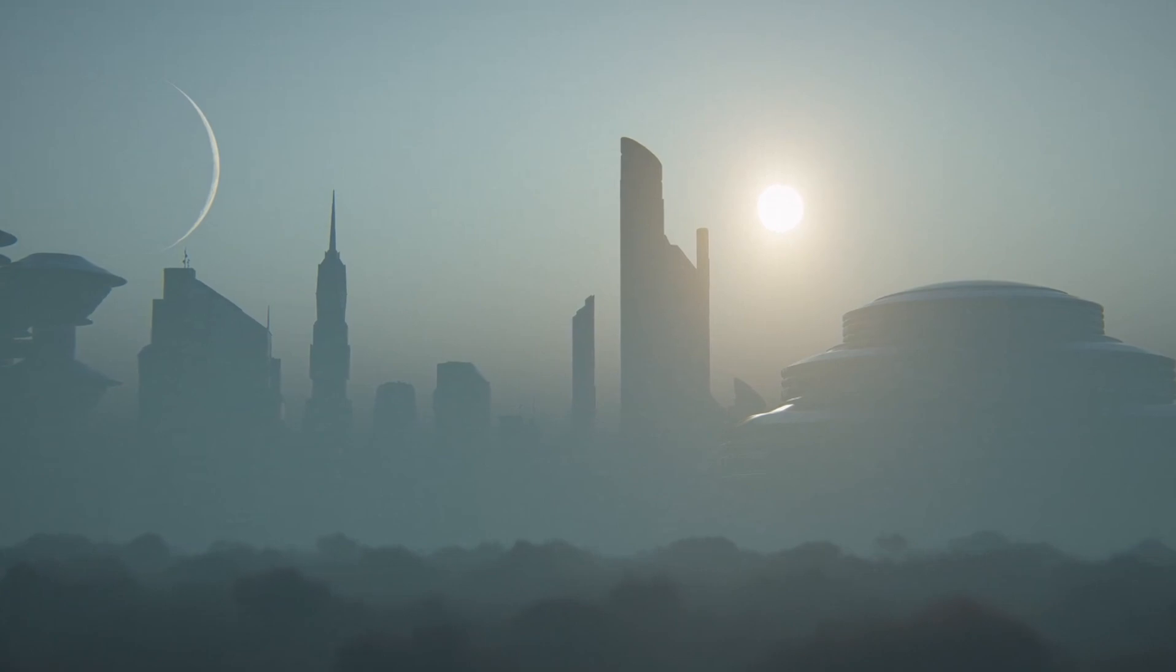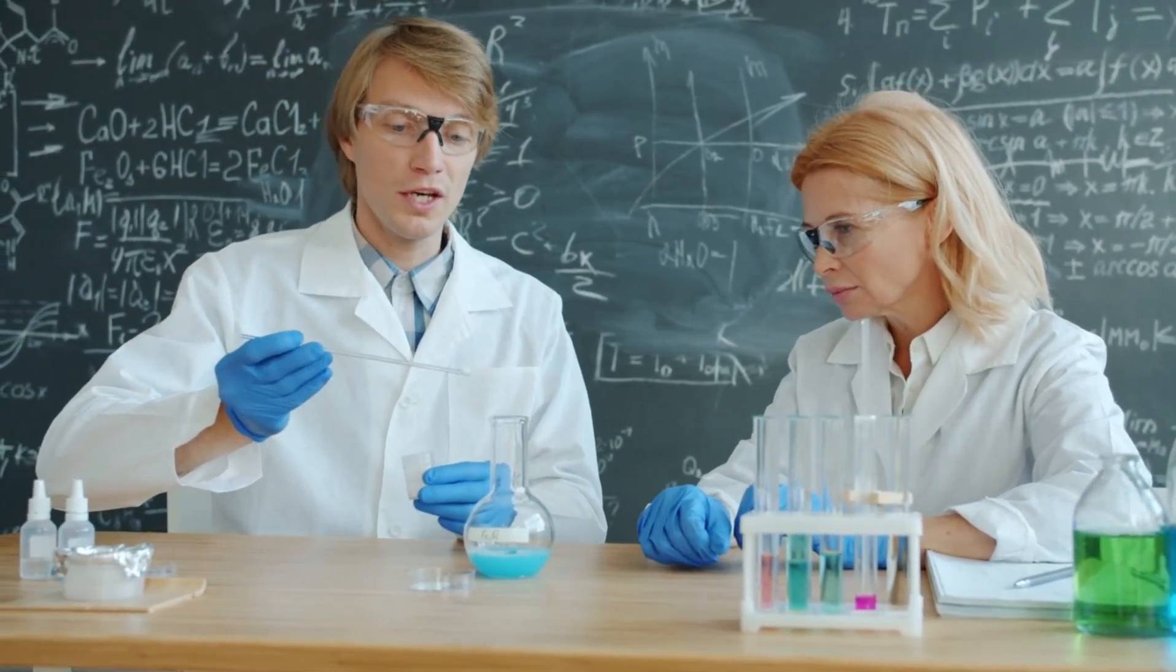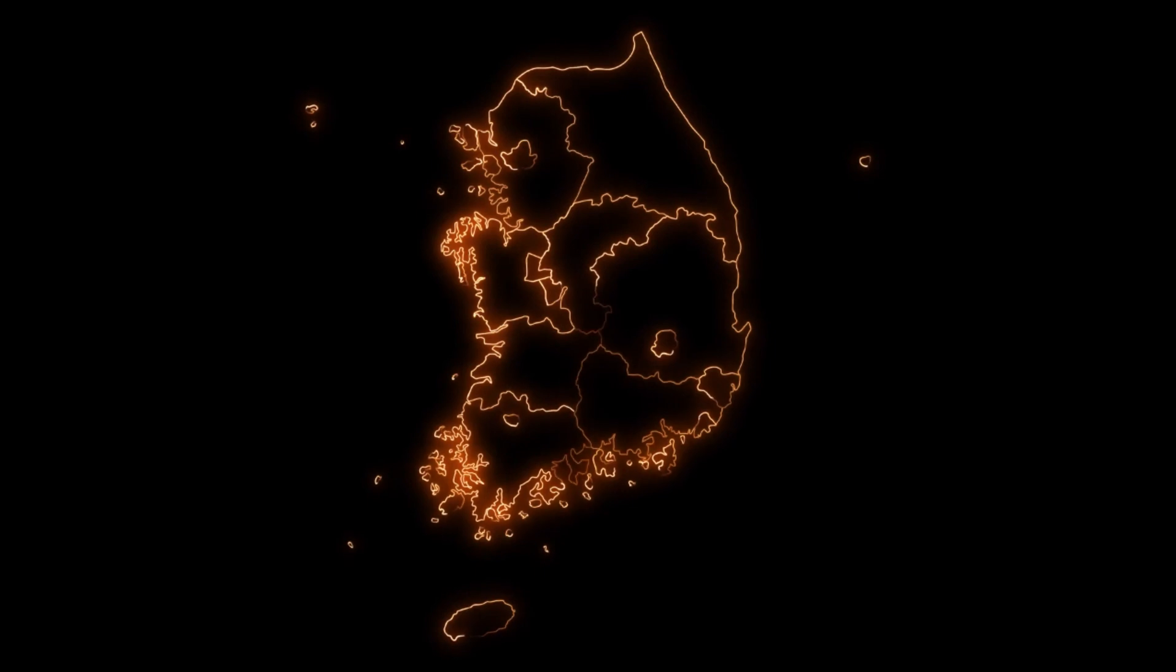Proxima Centauri b seems to behave differently from typical rocky planets, which absorb sunlight and emit heat. The intriguing element, though, is that this discovery goes beyond the simple observation of lights in space.